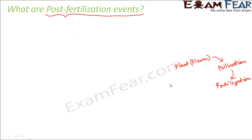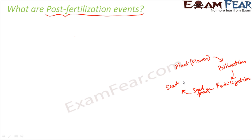Once that fusion has happened, the zygote is formed. The flower's petals and sepals fall off, the ovary gets converted into a fruit, and the ovule gets converted into a seed. Once the seed is formed, seed germination takes place, giving rise to a seedling, which again grows to become a mature plant, and this cycle continues.